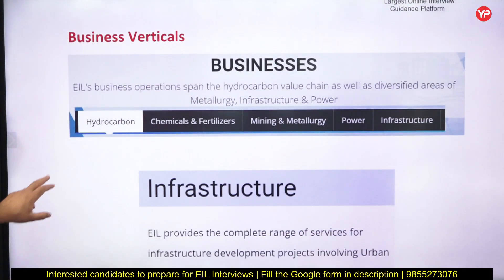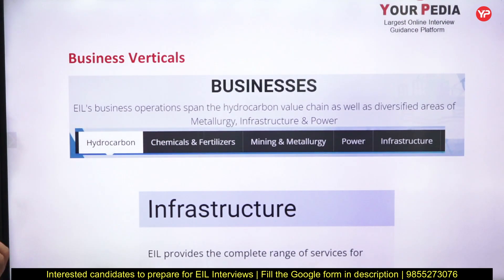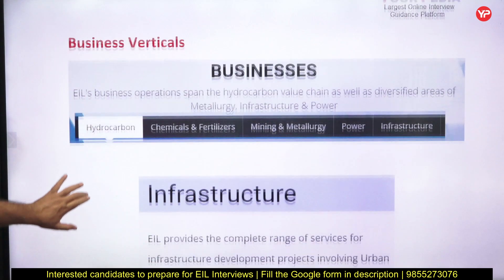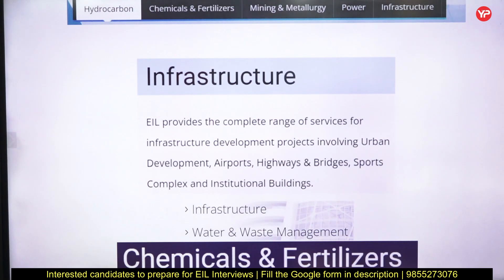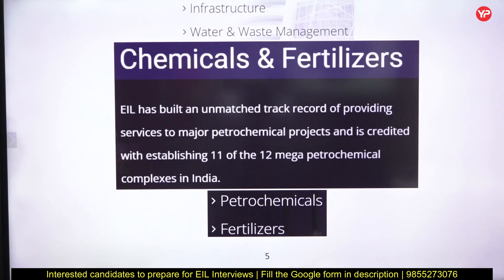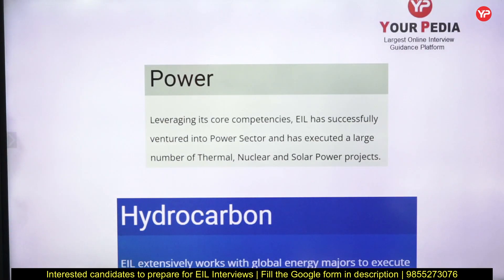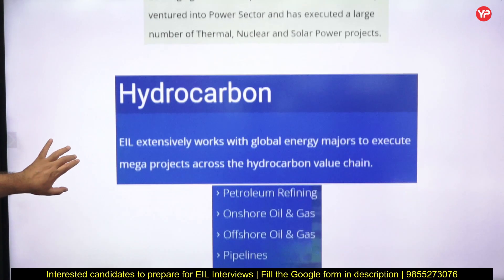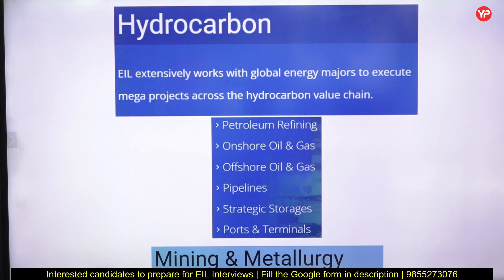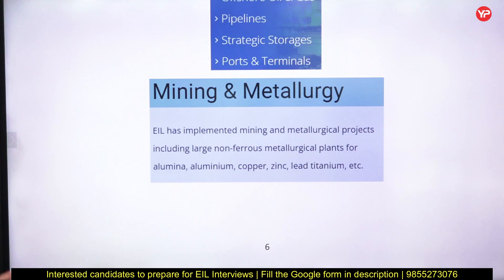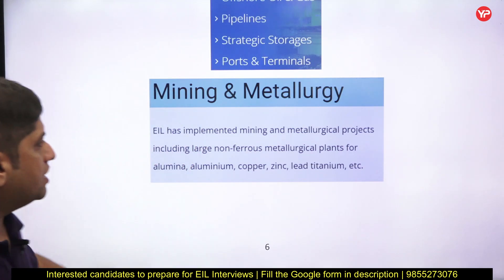The various business verticals of EIL include hydrocarbon, chemical and fertilizer, mining and metallurgy, power, and infrastructure. Infrastructure covers airports, highways, bridges, urban development, and buildings. EIL also handles water and wastewater management, and the entire hydrocarbon value chain, including thermal, nuclear, and solar power projects. So EIL has ventured into so many economic sectors. This is why you want to join EIL — to lead a career in consultancy, learn different things, and handle different projects.